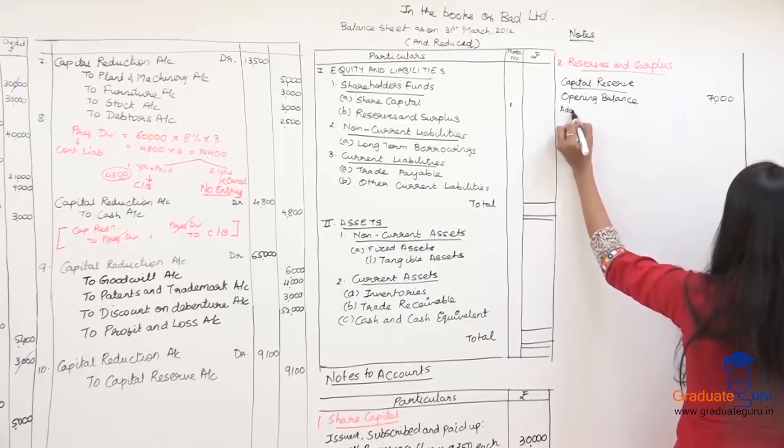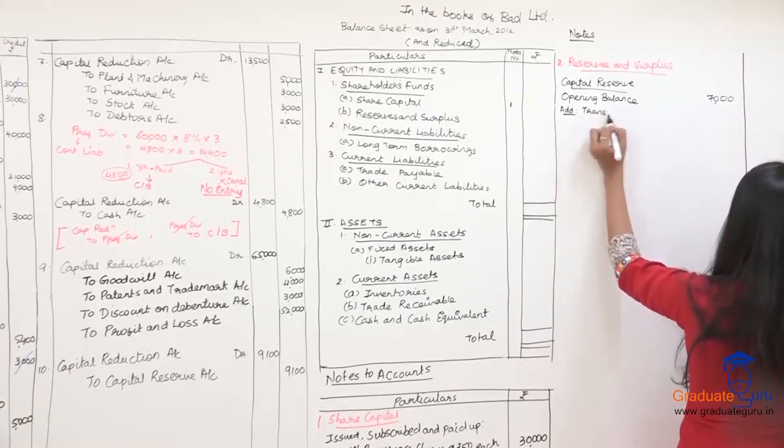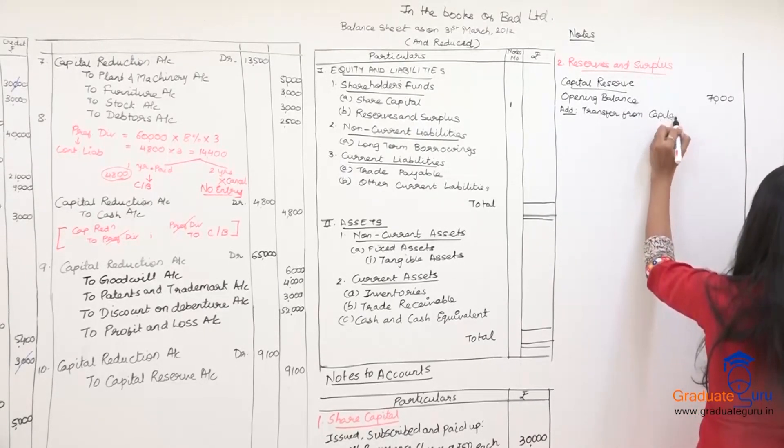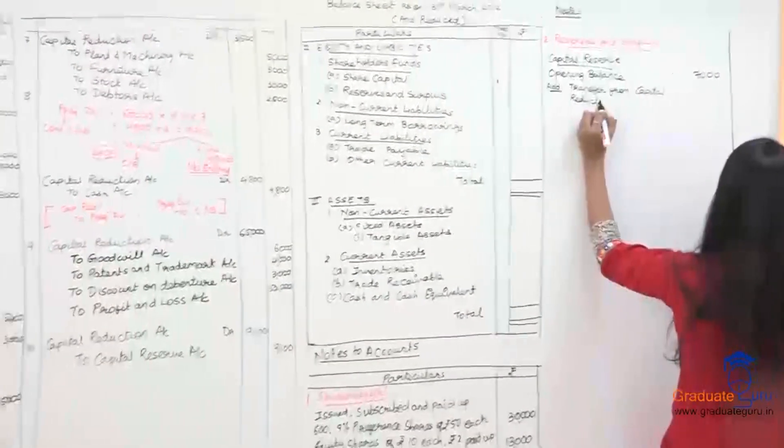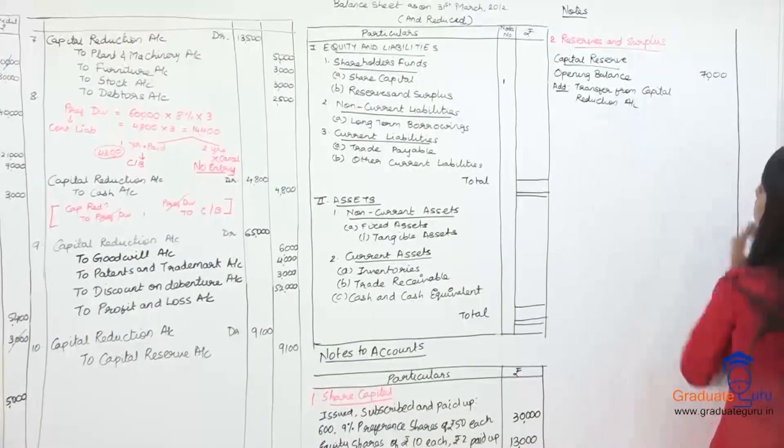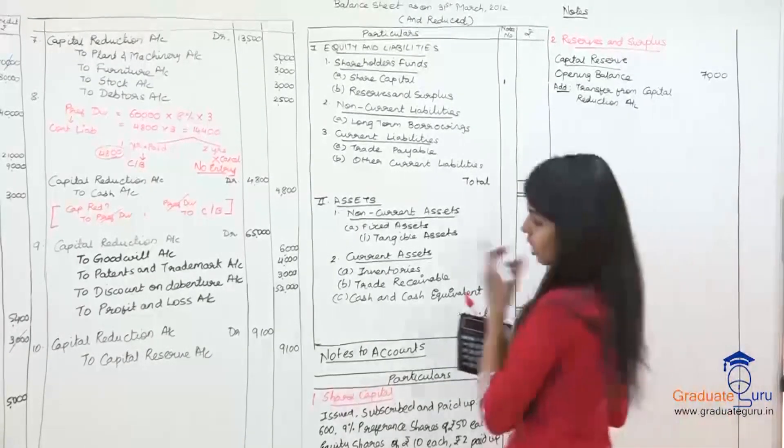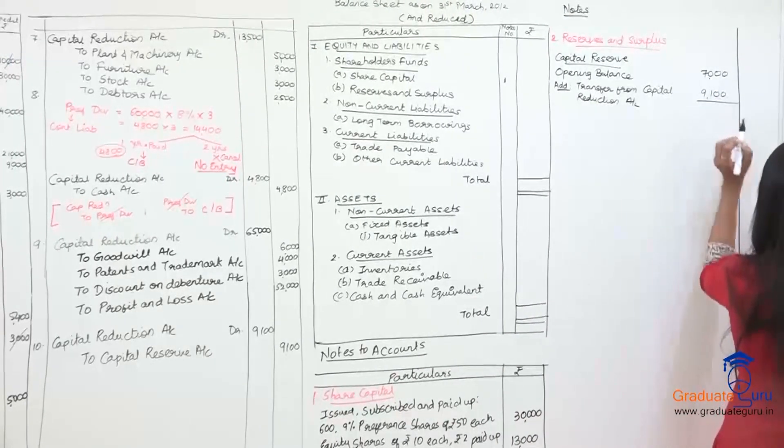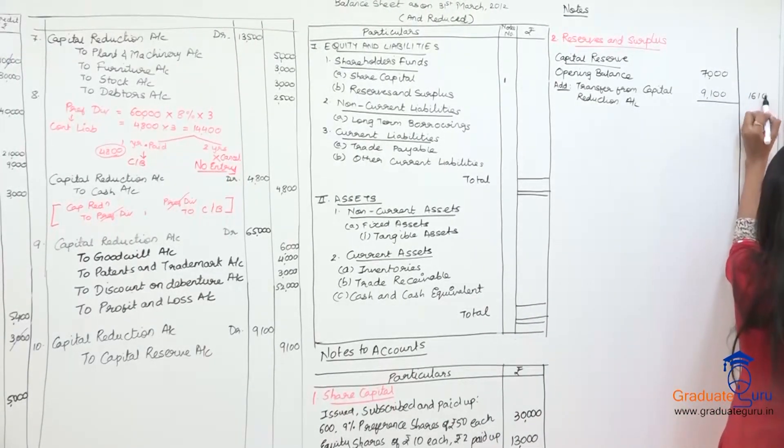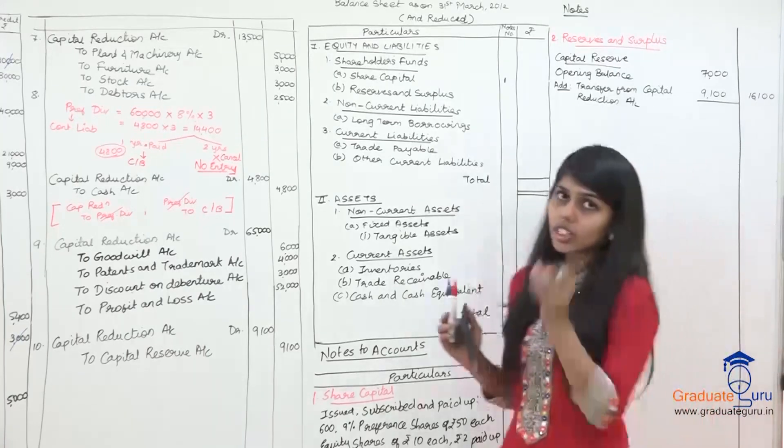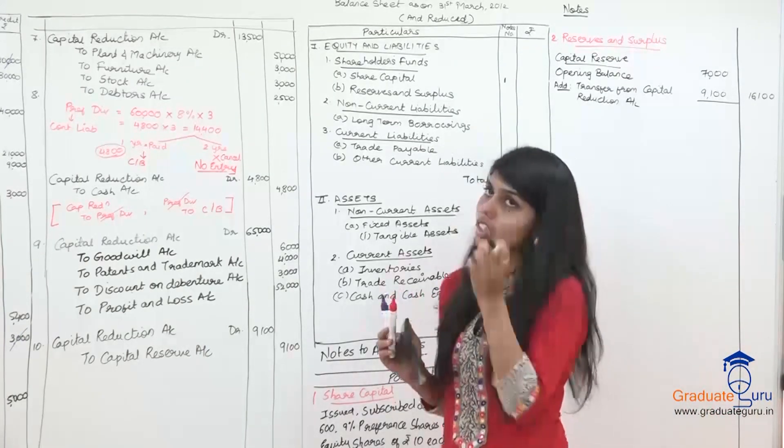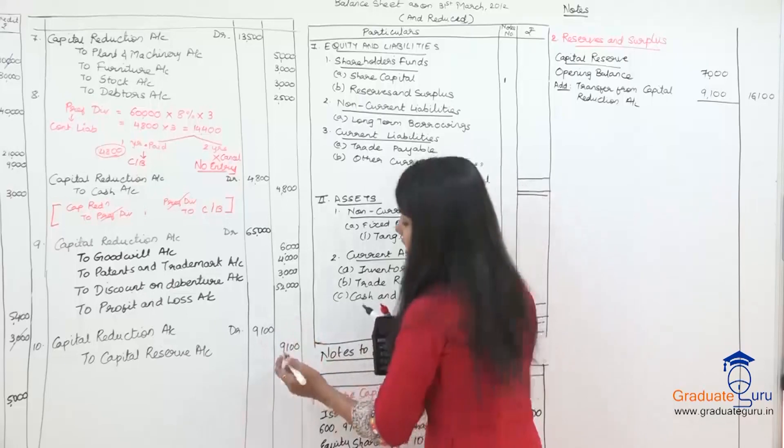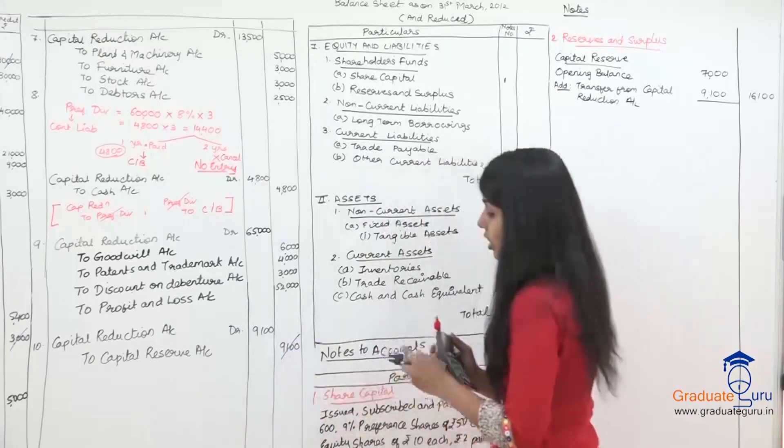Add transfer from capital reduction account. Transfer from capital reduction account kitna hua? Nine thousand one hundred. See yeh samjha aapka yeh sixteen one hundred aya? Abhi dekho yeh sixteen one hundred ko abhi total mat karo. Kyunki shayad agar kuch raha gaya baad mein, to ho sakta hai. So capital reserve ko strike off kar diya maine hai.